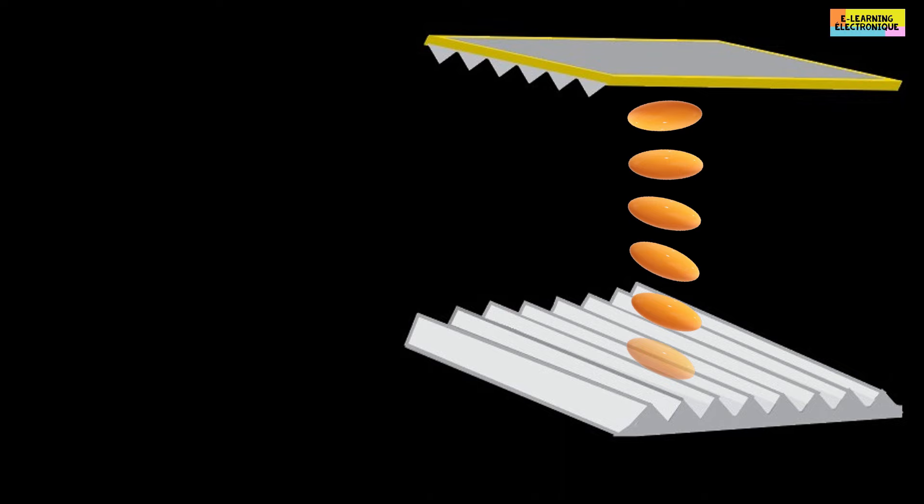In order for the liquid crystal molecules to adopt the helix shape, an additional layer is created called an anchoring layer. It is made of a chemical substance belonging to the polyimide family. It is an insulating and transparent substance. Grooves are created by friction.